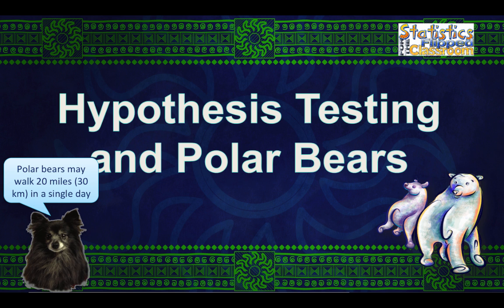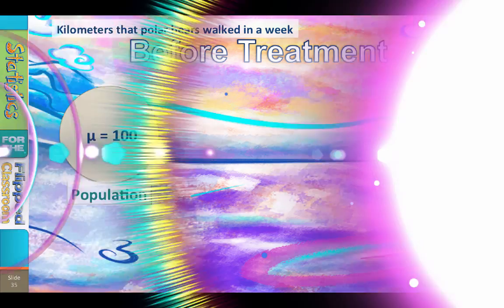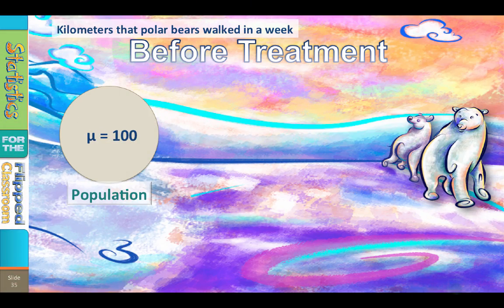Let's use this in an example to illustrate the logic of hypothesis testing. We do a literature review and find that the typical polar bear will walk about 100 kilometers in a week. Now this 100 kilometer number is a round number, and we know that round numbers are always liars.